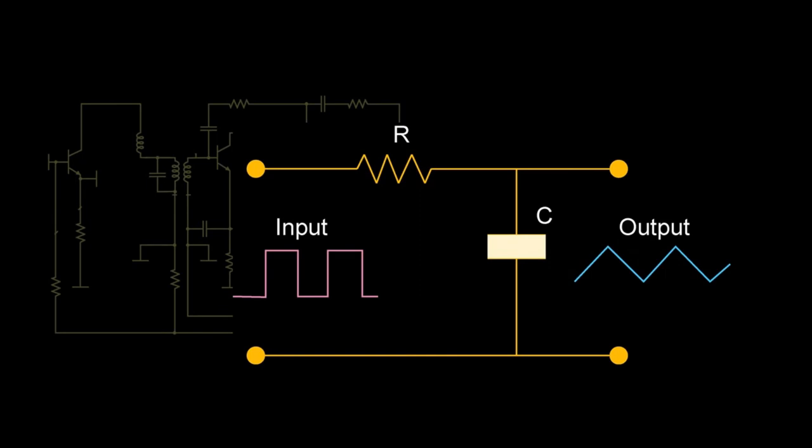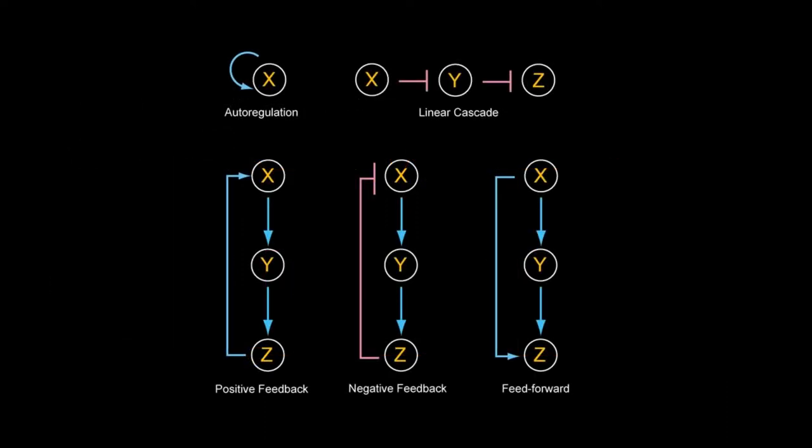Here I have an integrated circuit. It is made up of just two components: a resistor and a capacitor. It converts a square wave into a triangular waveform. Similarly, biological networks are also made up of smaller sub-networks that are repeatedly used. We call them network motifs.